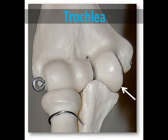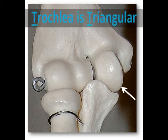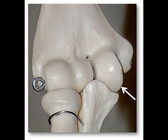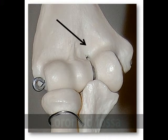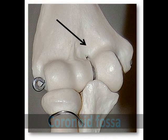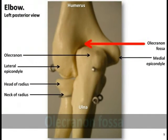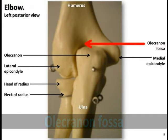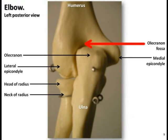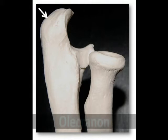The trochlea is a spool-shaped process located medial to the capitulum. The trochlea has a more triangular shape and is more pointed, not curved like the capitulum. It articulates with the trochlear notch of the ulna. The coronoid fossa is an anterior depression that articulates with the coronoid process of the ulna during flexion of the forearm. The larger and deeper depression on the posterior side is the olecranon fossa — because of its size and depth, it's a great landmark to identify the posterior side of the bone. It articulates with the olecranon of the ulna during extension or straightening of the forearm.